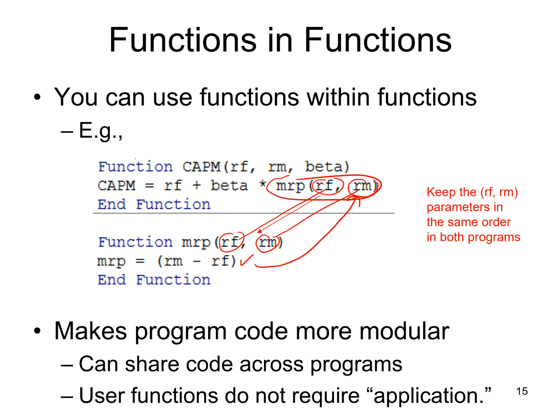Why have functions in functions? Basically, it's modularity in code. If you're always doing some calculation like MRP, even though this is a simple example, you can have smaller functions that add up to larger functions. The main place I do this is with Black-Scholes functions. If you remember Black-Scholes calculations, there are long formulas for calculating probabilities, normal probabilities.